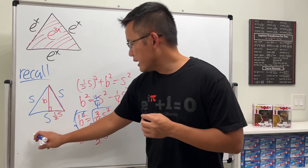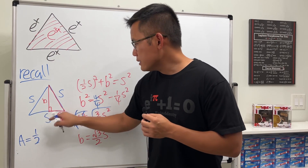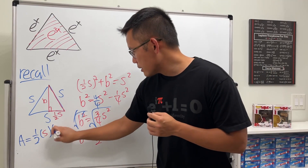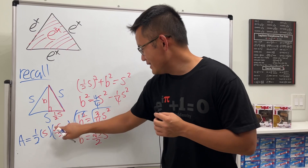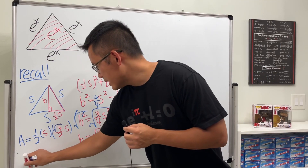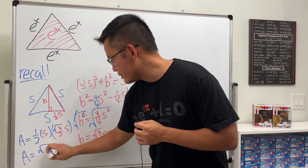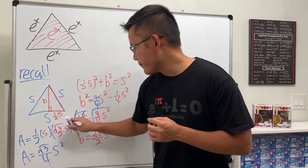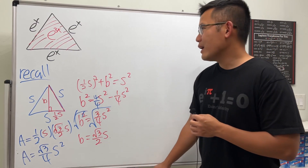Now the area is one half times the base times the height. The base is s and the height is b = (√3/2)s. So area = (1/2) · s · (√3/2)s = (√3/4)s². That's the formula for the area of an equilateral triangle — a quick proof done.